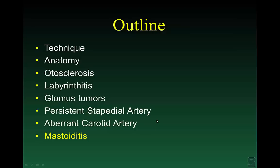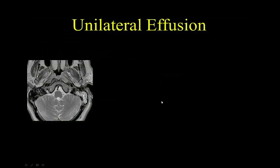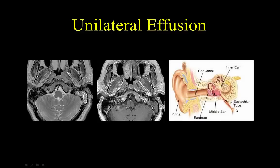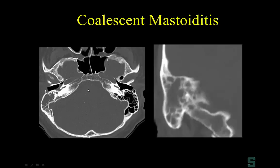Next let's talk about mastoiditis. Be careful when you see unilateral effusion — always look at the nasopharynx, because early nasopharyngeal carcinoma in the fossa of Rosenmüller can be very subtle on T1. The reason is that the tumor can occlude the eustachian tube opening at the torus tubarius, causing a unilateral effusion. Any time you see unilateral serous otitis or unilateral effusion, your eye must go to the nasopharynx.